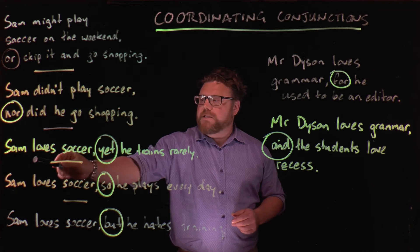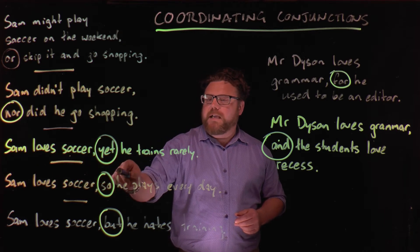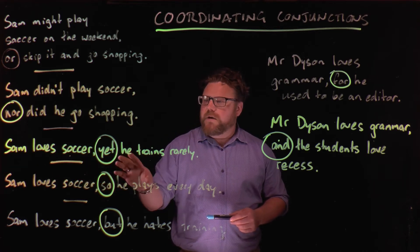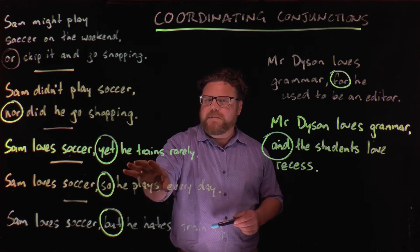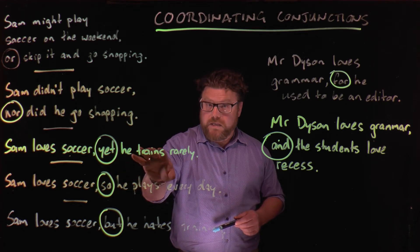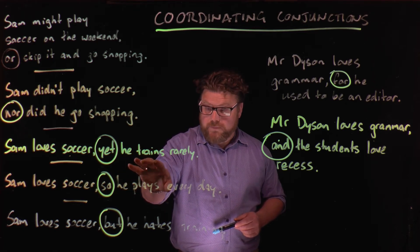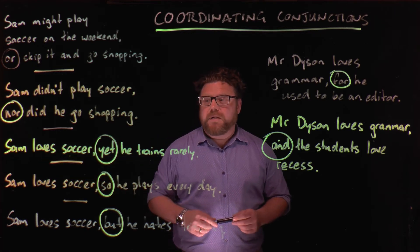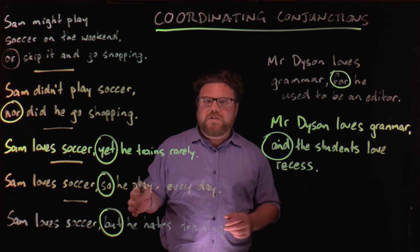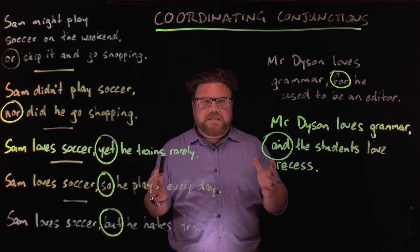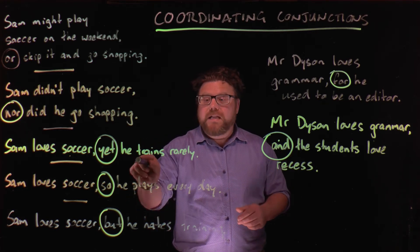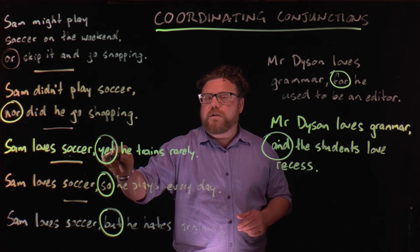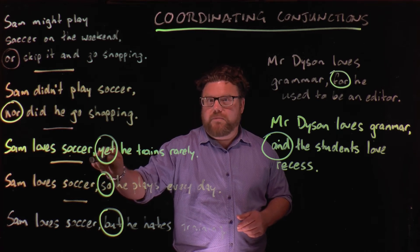In this next one, we've got: Sam loves soccer, yet he trains rarely. This is showing that something happens in the second independent clause despite what we have learned in the first. He loves soccer, yet despite that fact, he trains rarely. So we've used the coordinating conjunction 'yet,' again with a comma.